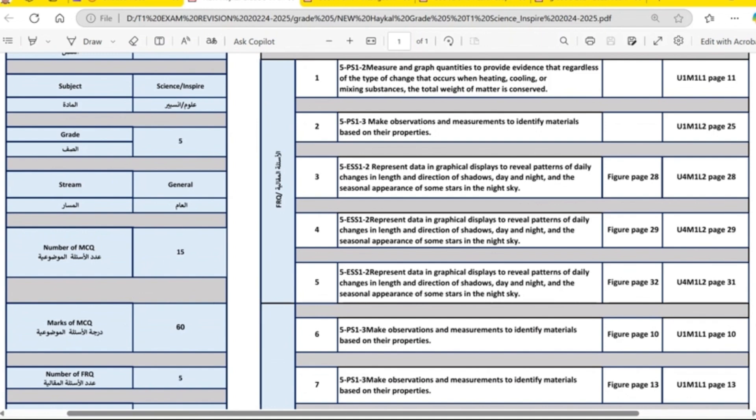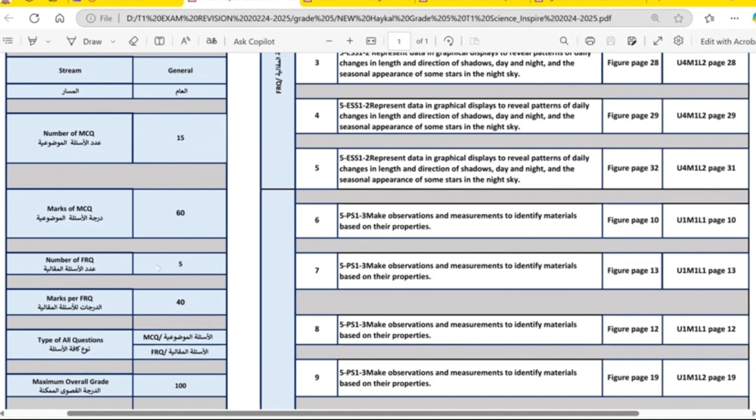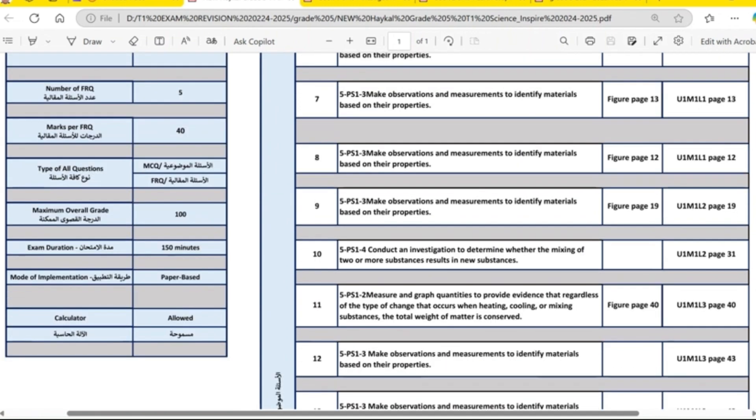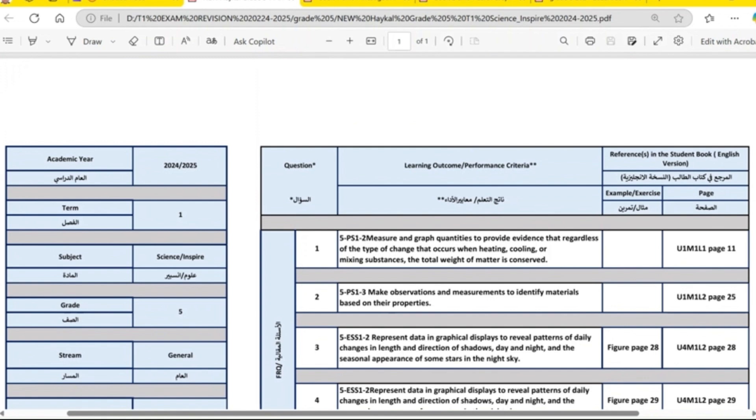There are 15 questions, multiple choice A, B, C, D, worth 60 marks. And then 5 free response where you write a sentence, worth 40 marks. So the exam is one paper and calculators are allowed. You can see here number 1.